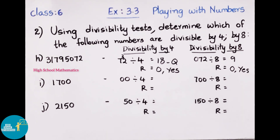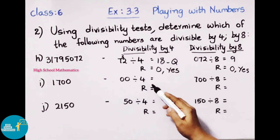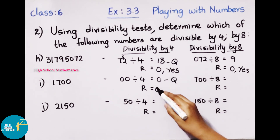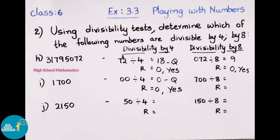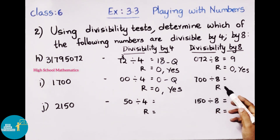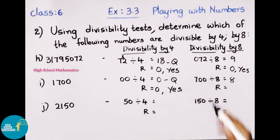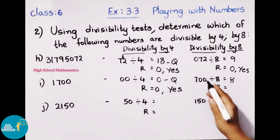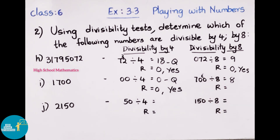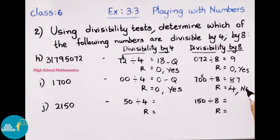Next number: 1700. Checking divisibility by 4: last 2 digits are 00. Dividing 00 by 4 gives remainder 0. Yes, it is divisible by 4. Checking divisibility by 8: last 3 digits are 700. 8 times 7 is 56; after division, remainder is 4. So 1700 is not divisible by 8.